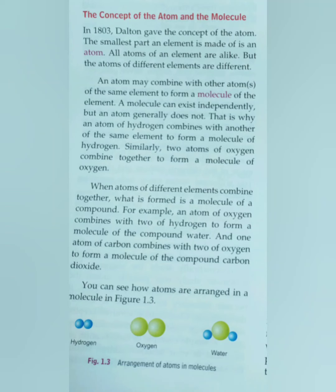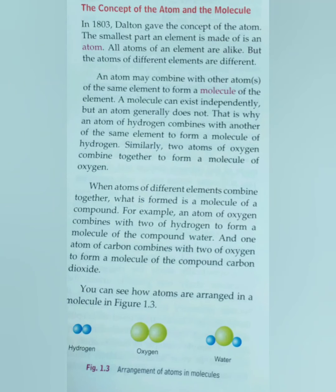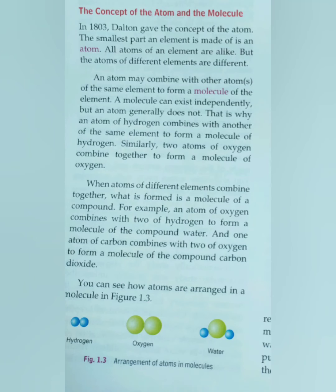Children, you must also know the difference between the molecule of an element and the molecule of a compound. Atoms combine with atoms of the same element to form a molecule of that element. For example, one atom of hydrogen combined with another hydrogen atom forms a molecule of hydrogen, and one atom of oxygen combined with another oxygen atom forms a molecule of oxygen. When atoms of different elements combine together, what is formed is a molecule of a compound — water is the example for a compound.